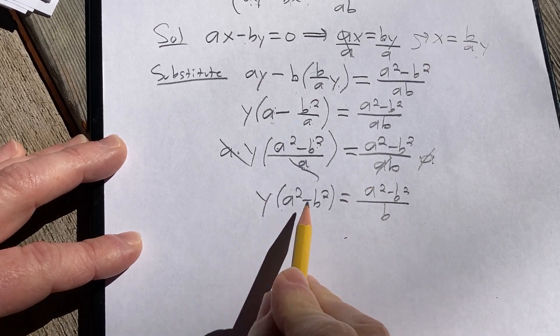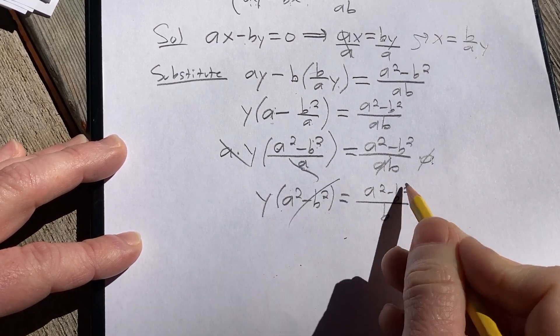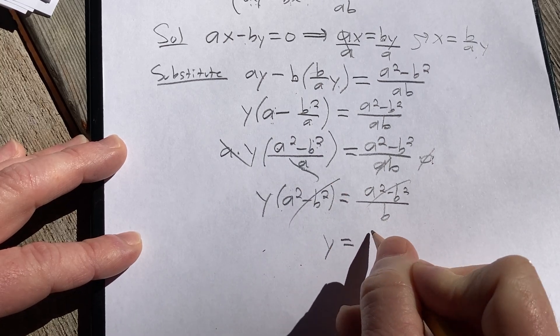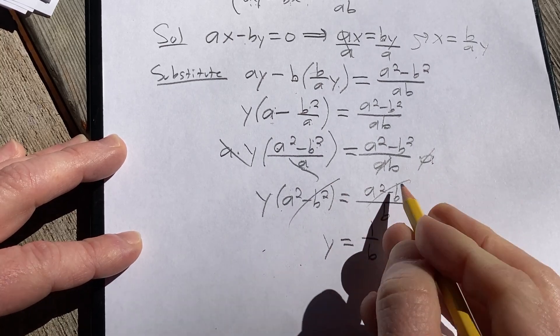Now we can divide both sides by a squared minus b squared. So we get y equals one over b. And that's the answer for y.